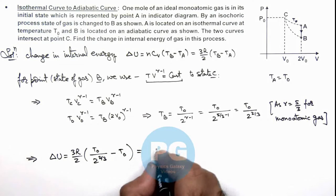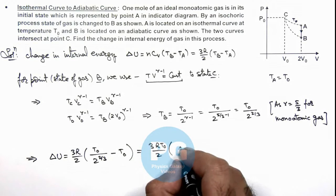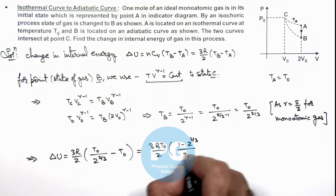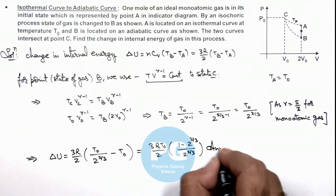Which gives 3RT₀/2 multiplied by (1 - 2^(2/3))/2^(2/3). This is the final result of this problem.